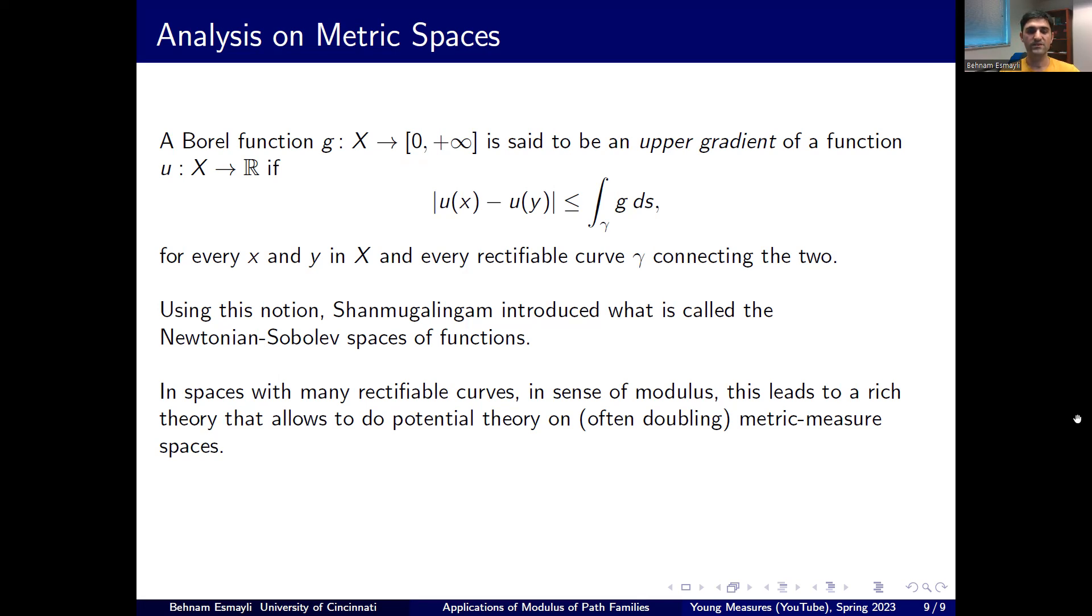And how do we measure, how do we know if the space has a lot of rectifiable curves? Again, the notion of modulus and the Loewner spaces especially, right? Those which have lots of paths between any two given continua. The key notions are Loewner spaces, Poincaré inequalities. If you have Poincaré inequalities, these Newtonian spaces coincide with other notions of Sobolev functions previously defined on metric measure spaces. But then there is this important link that basically, under natural assumptions, having a Poincaré inequality is equivalent indeed to being a Loewner space. So everything boils down to having a lot of curves in the sense of modulus.